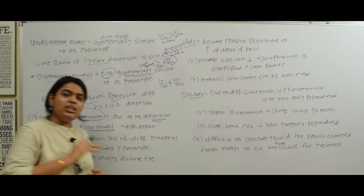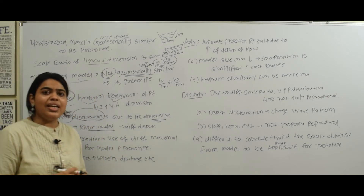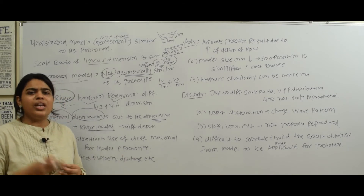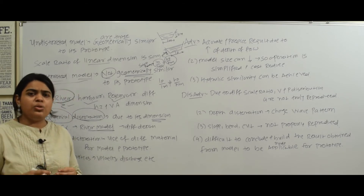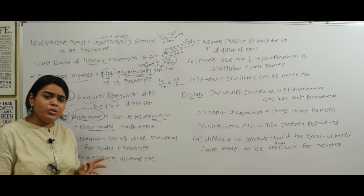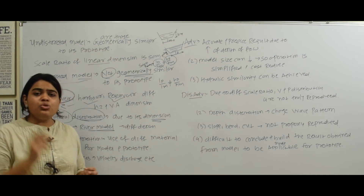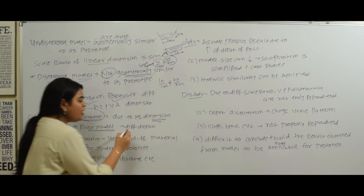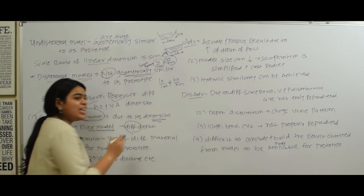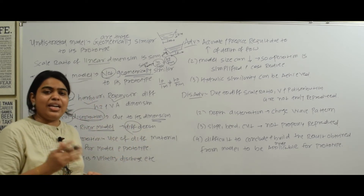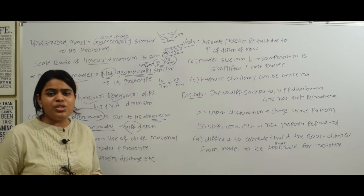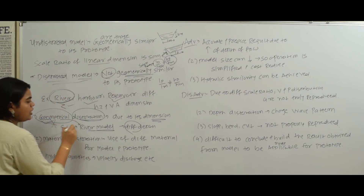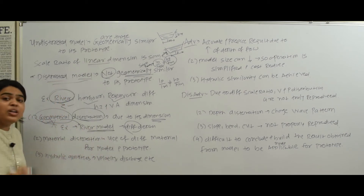If there is a river, I have studied a model of it — I have studied the hydraulic jump, wave formation, waves, and eddies. In that model, there is not enough depth compared to the actual structure. The model does not have the same depth as the prototype. That is an example of geometric distortion, and yes, this kind of distortion can occur in a river model.